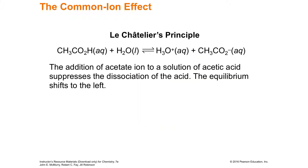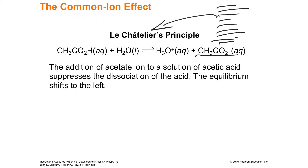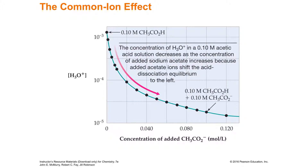To review: since acetate is one of the products, adding more acetate causes the equilibrium to shift left to alleviate that stress, making less and less hydronium. A chart confirms that as you increase the amount of acetate, the concentration of hydronium drops — the more acetate you add, the more the equilibrium shifts left, forming more acetic acid reactant and less hydronium. This is called the common ion effect.